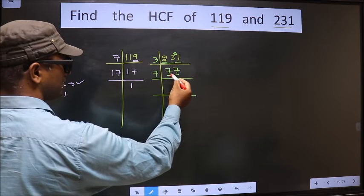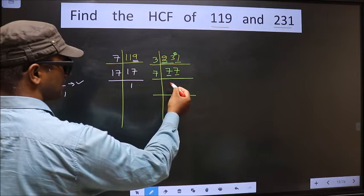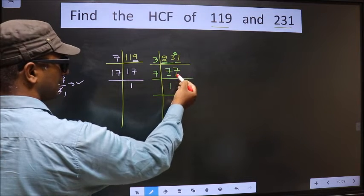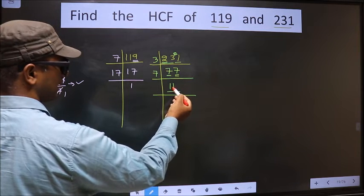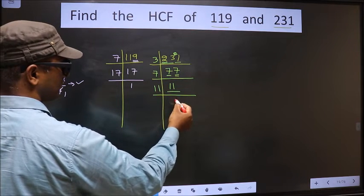The first number is 7. When do we get 7 in the 7 table? 7 times 1 is 7. We have 7 again, so we write 1 again. So here we have 11. 11 is a prime number, so 11 times 1 is 11.